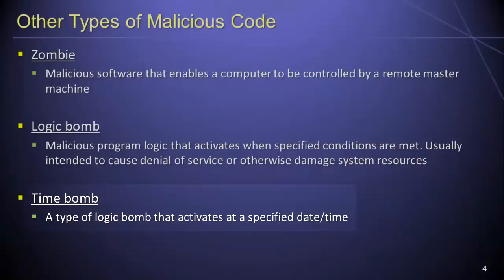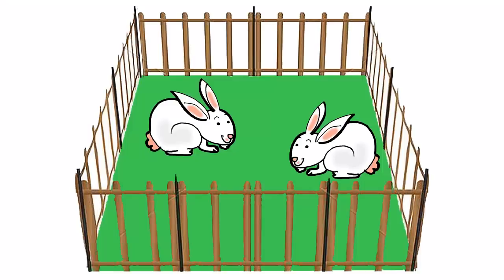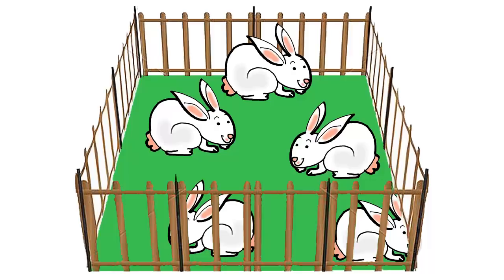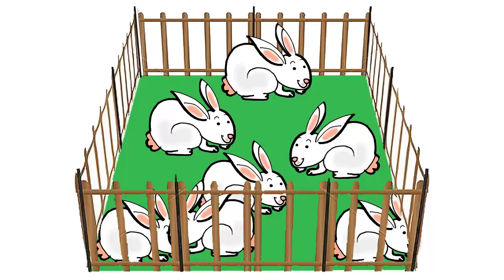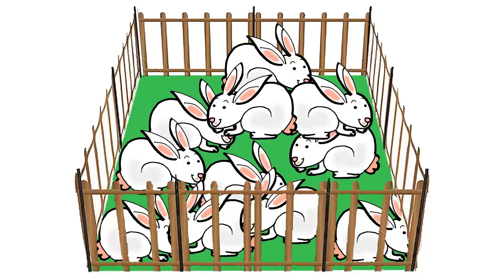With respect to viruses and worms, a rabbit is a virus or worm that replicates itself without limit for the purpose of draining or exhausting system resources. In the real world, rabbits are well known for their proclivity to reproduce in large numbers. If the population of rabbits is constrained to an area with a limited supply of resources, eventually the rapidly growing number of rabbits will consume all of the available resources, which is why a virus or worm that replicates itself without limit is known as a rabbit.